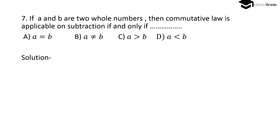Question number 7: If A and B are two whole numbers, then commutative law is applicable on subtraction if and only if A equals B. So option A, A = B, is the correct option.